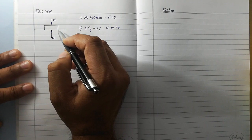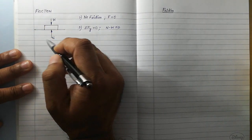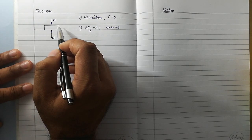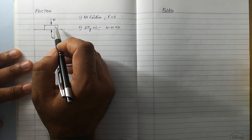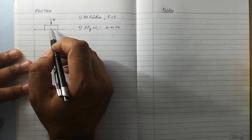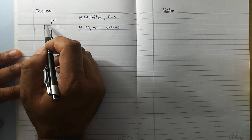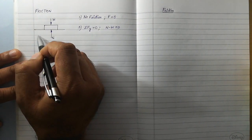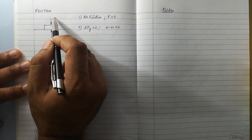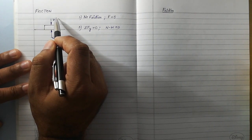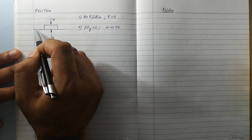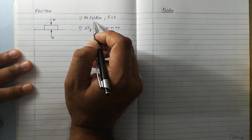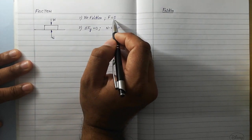If we talk about friction in this particular situation, there will be no friction. Why? Because friction will not develop as long as there is no component of force acting on the body along the surface. In this whole system, only weight is acting in the downward direction and it has no component along the surface — it means there will be no friction. No friction means F is equal to 0.